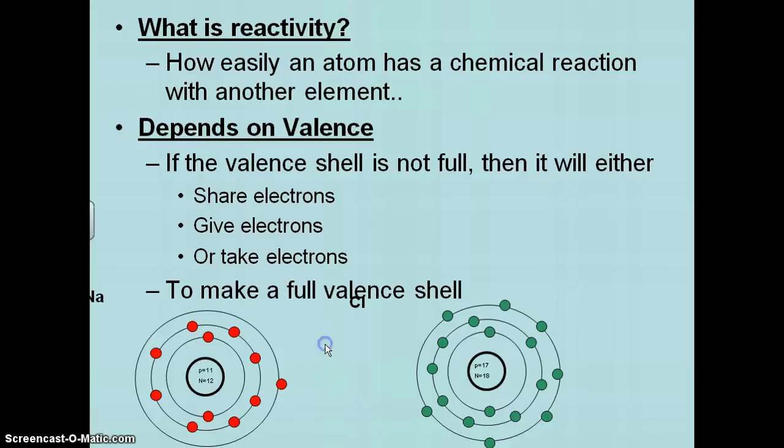So what happens is electrons can move. So now we end up with our second level completely filled with eight, and our third level on chlorine here, completely filled with eight, changes the charges and thus creates a compound. And this is how elements become reactive with one another.